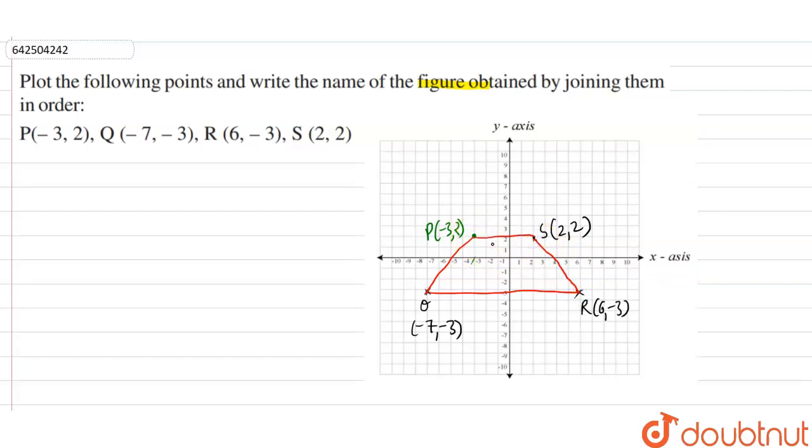So, if you can observe that this figure is a trapezium. This figure is a trapezium as P, S is parallel to Q, R. And these are the two non-parallel sides. So, we can say this figure is trapezium.